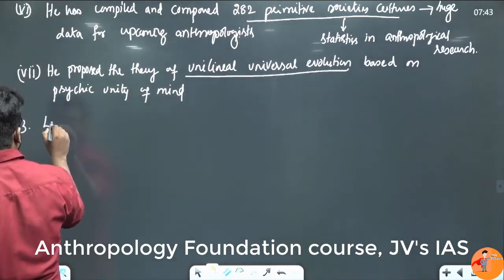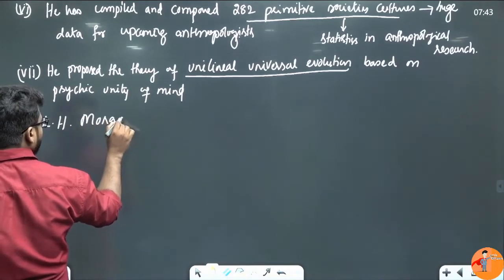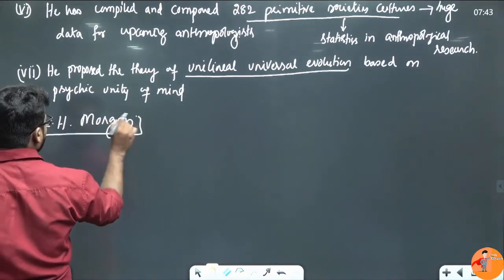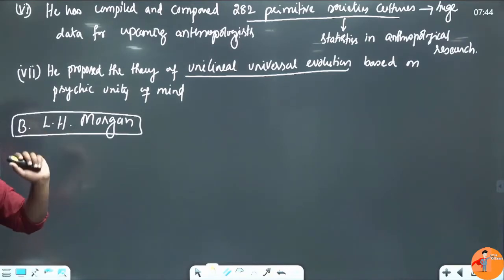Second person, that is Lewis Henry Morgan. Please write L.H. Morgan or Lewis Henry Morgan. He is equivalent of E.B. Taylor. Just as E.B. Taylor is the father of British Anthropology, in that way Lewis Henry Morgan is the father of American Anthropology.